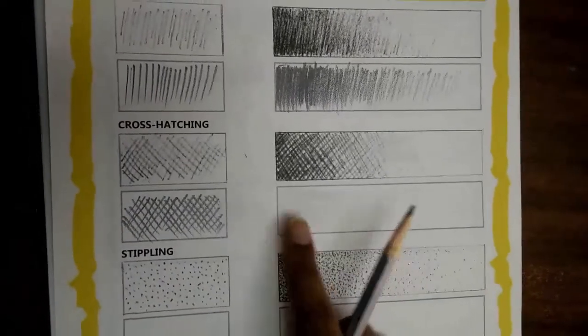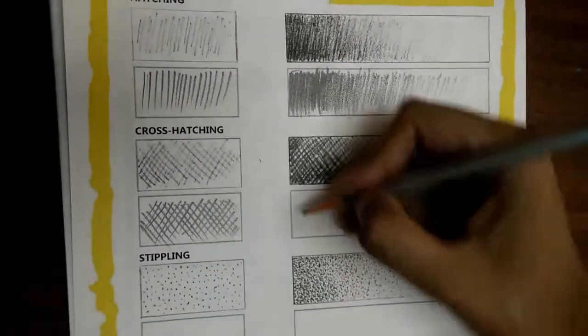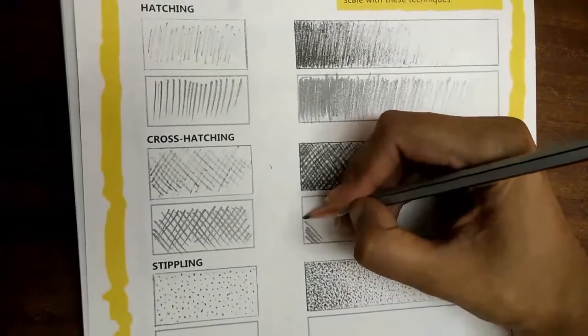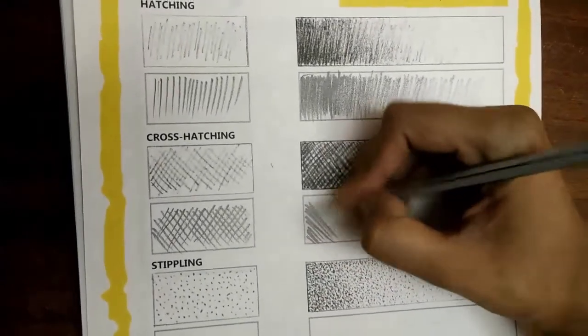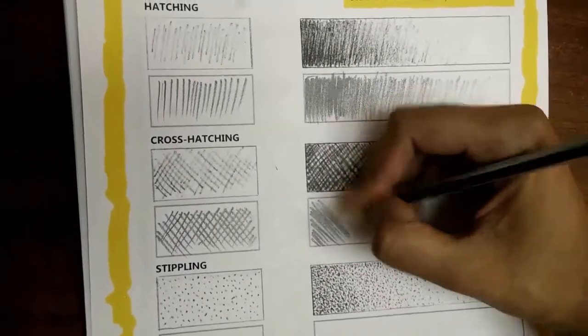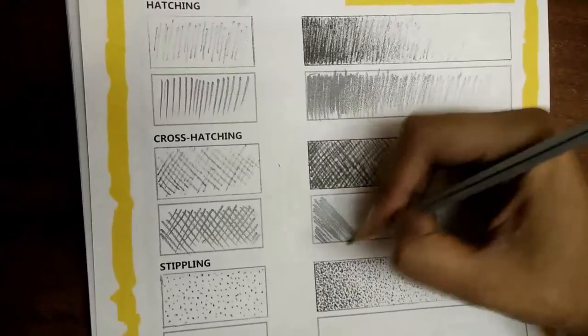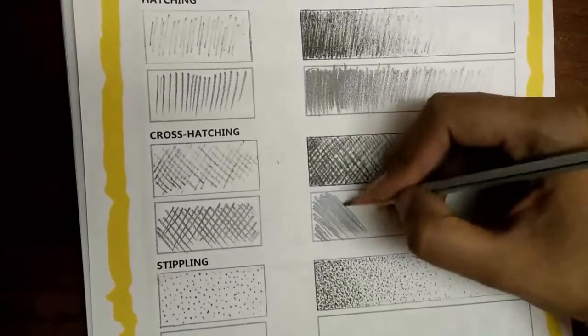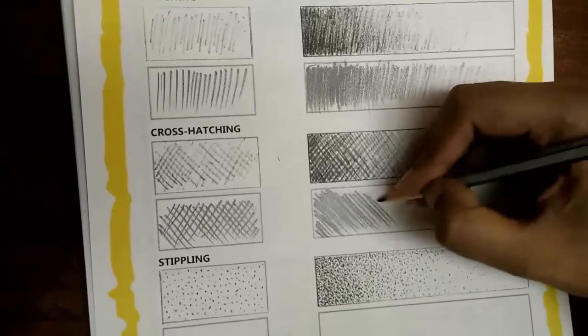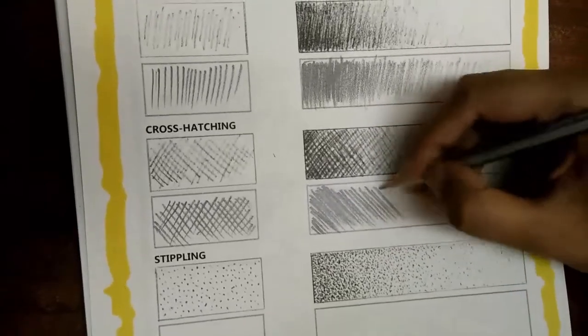Now, let us make a value scale using the cross hatching technique. Apply greater pressure for a darker shade. And go on releasing pressure as you move towards the lighter tones.